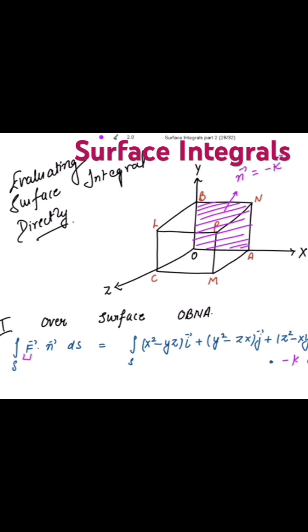So here we have the dot product with minus k. When taking the dot product, we get negative of z squared minus x, y. Right? And what is ds? It is dx dy.